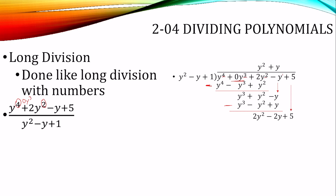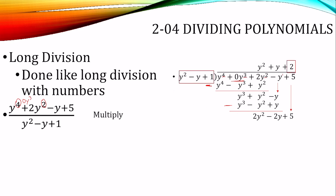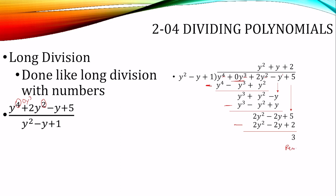Then we bring down and do it all over again. Divide the first terms: 2y squared divided by y squared is 2. We multiply — 2 times y squared is 2y squared, 2 times negative y is negative 2y, and 2 times 1 is 2. Then we subtract: 2y squared minus 2y squared is zero, negative 2y minus negative 2y is zero, and 5 minus 2 is 3. There's nothing else to bring down, so we're done. We write our answer by putting the remainder over the divisor — that is the quotient.